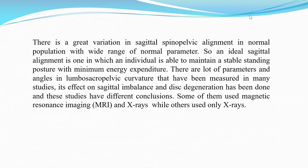There is great variation in sagittal spinopelvic alignment in the normal population, with a wide range of normal parameters. An ideal sagittal alignment is one in which an individual is able to maintain a stable standing posture with minimum energy expenditure. There are many parameters and angles in lumbosacropelvic curvature that have been measured in studies, with differing conclusions regarding sagittal imbalance and disc degeneration. Some studies used MRI and X-rays while others used only X-rays.